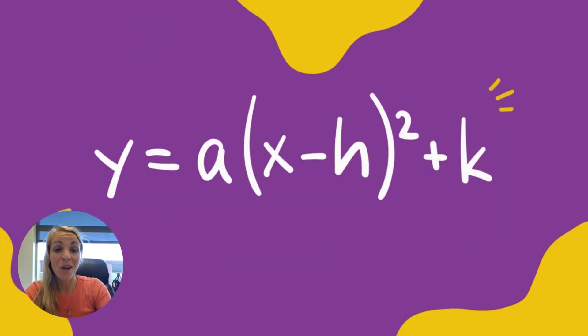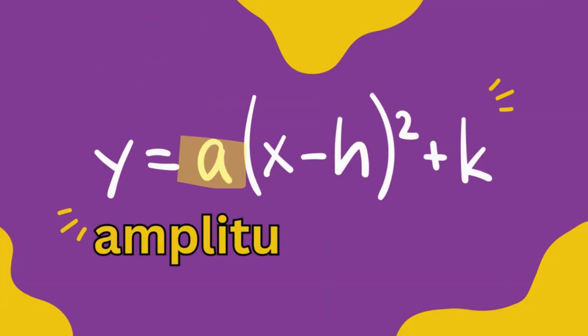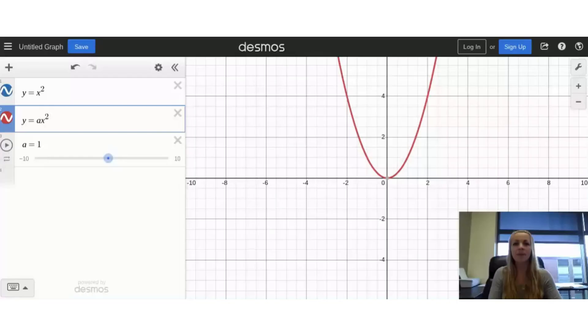This is graphing form for a quadratic. To explore amplitude, I have three things graphed over here. I have the parent graph, y equals x squared. I have y equals ax squared because we want to explore the parameter a, and I have this slider here. The slider is starting at a equals 1 because it just has a stretch factor of 1. Let's explore what happens when I change this.